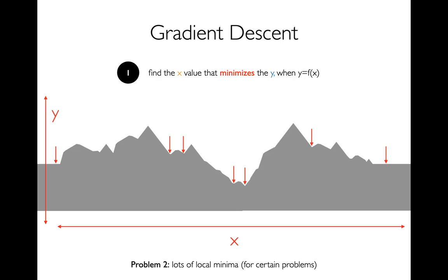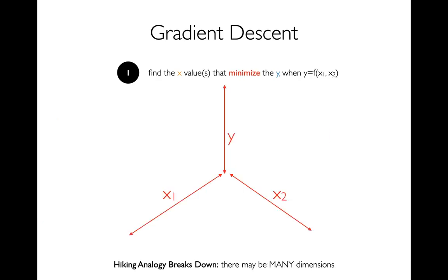Another problem, which maybe you've also seen from calculus, is that, well, there's all these local minima in different places. How do I know I'm finding the best one? I've drawn some of them here. There's more that I haven't even labeled. And so that's a concern for certain problems. It doesn't happen for all problems. There are some problems where the shape of the mountains is what we say convex. And there's only one local minima. And that local minima also happens to be the global minima.